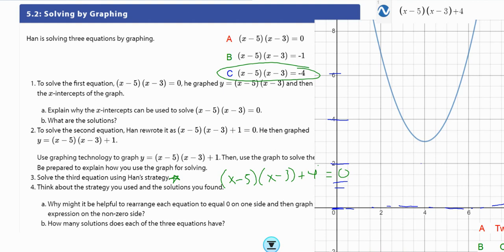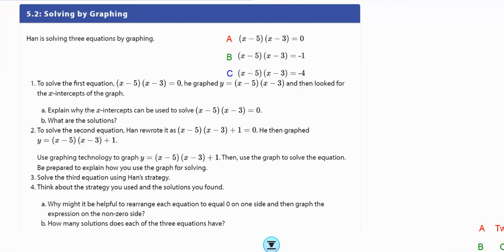So why might it be helpful to rearrange each equation to equal 0 on one side and then graph the expression on the non-zero side? Well, if I set it equal to 0, then I can look right here and focus on this x-axis and see where does that graph, that parabola, touch this x-axis or when y equals 0, right? Y equals 0 is the x-axis. How many solutions does each of the three equations have? Let's see, on the first one we looked at, it had two solutions. It crossed the x-axis twice, and the second one it crossed only one time, and the third one you saw it had no solutions. It did not touch the x-axis, it didn't equal 0 ever. The y value didn't equal 0 ever.